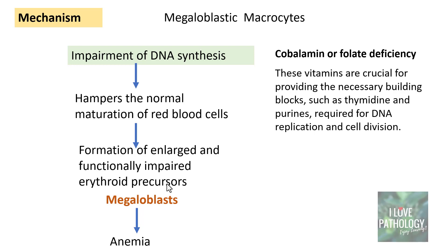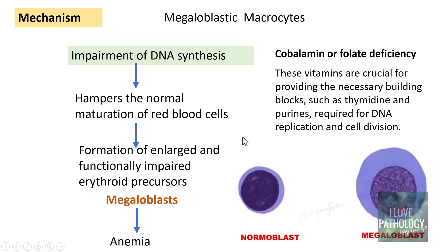Comparing a normoblast and a megaloblast, the megaloblast shows an increase in the size of the erythroid precursor — 'megalo' meaning bigger. The cytoplasm is more abundant, and because of impaired DNA synthesis, nuclear maturation lags behind, producing a characteristic 'sieve chromatin' pattern. So the hallmarks are: large erythroid precursor, sieve-like nuclear chromatin, and abundant bluish cytoplasm.